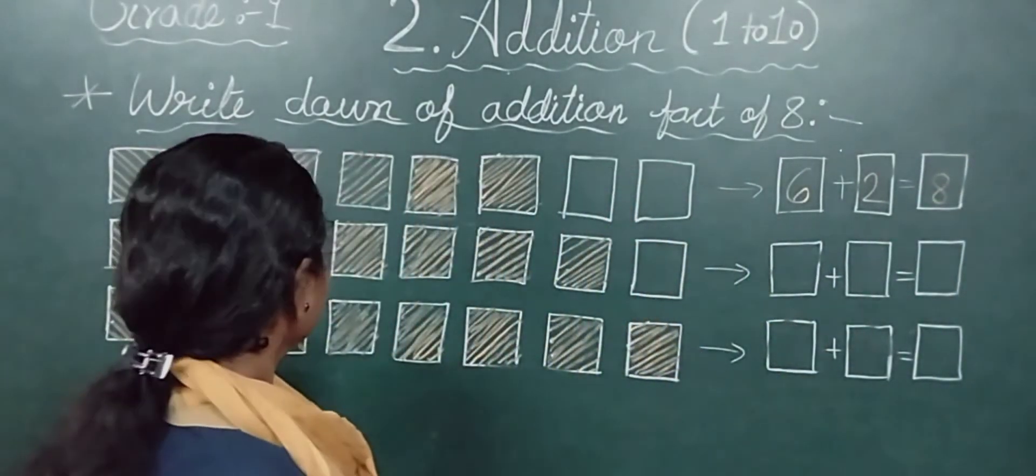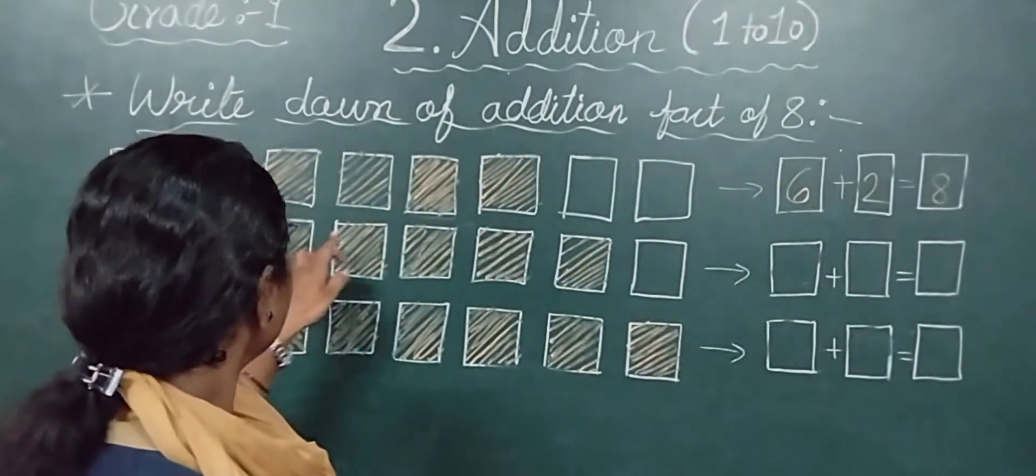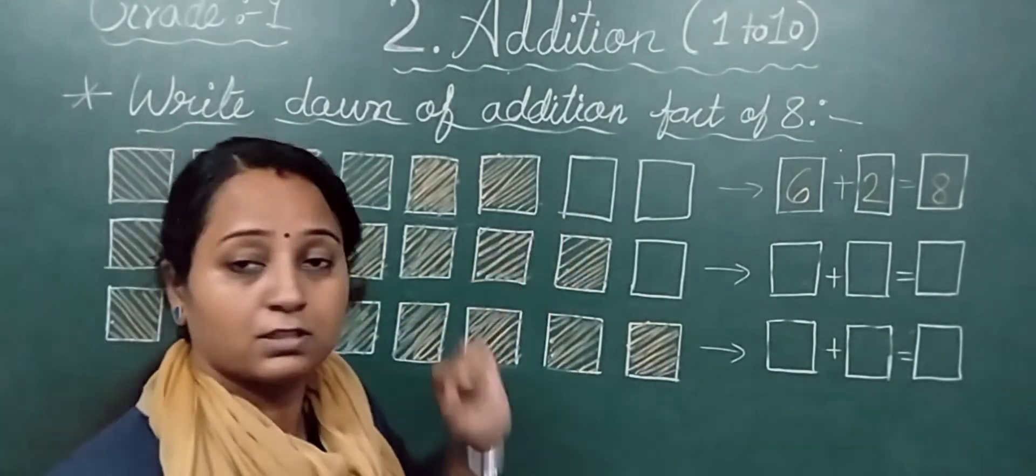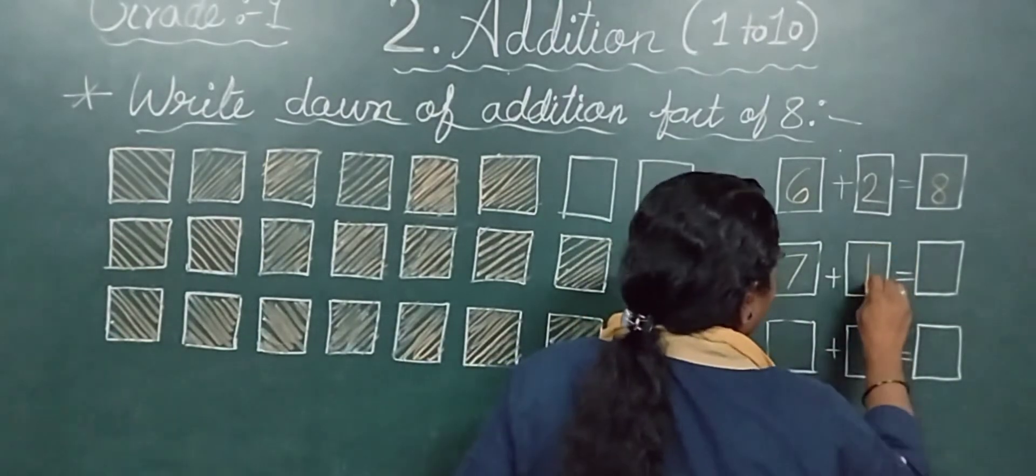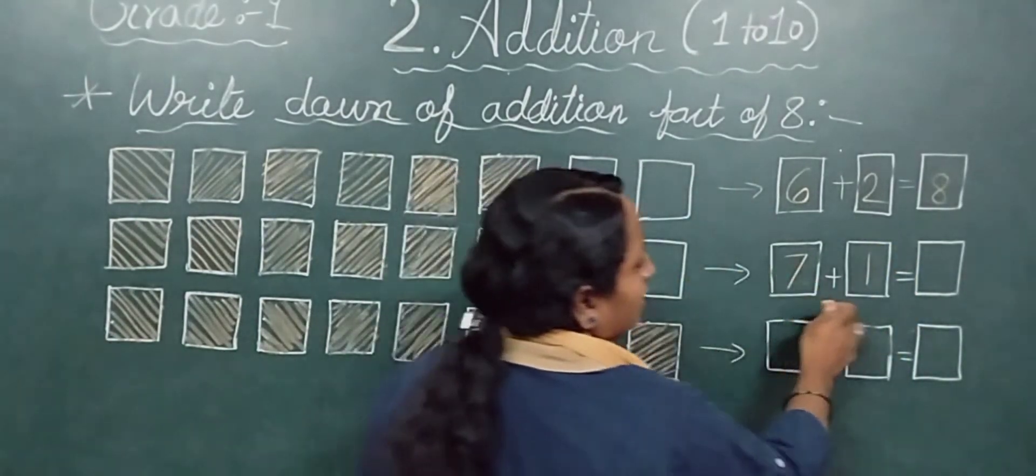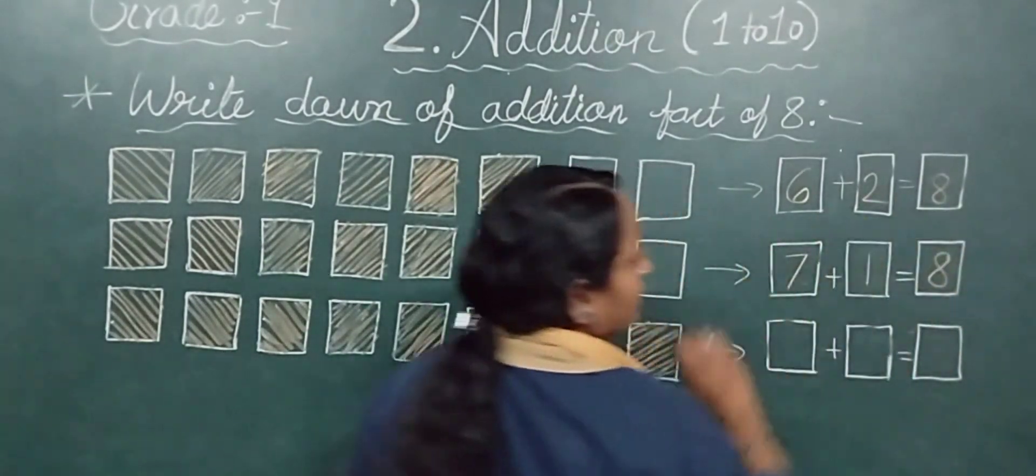Now again we will count: 1, 2, 3, 4, 5, 6, 7. Seven are colored, and 1 is plain. 1. So 7 plus 1, how much? Again answer is 8.